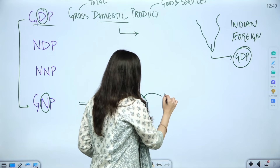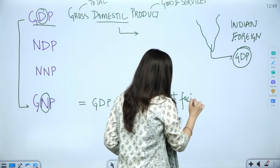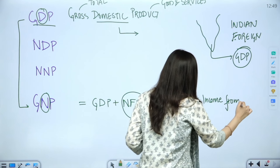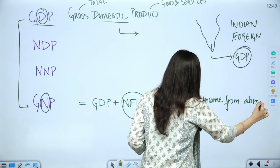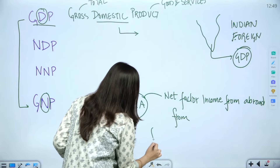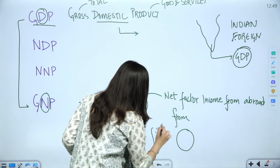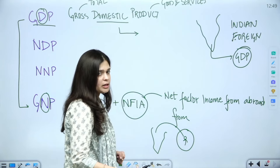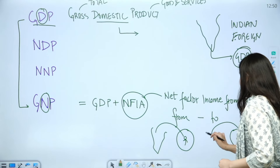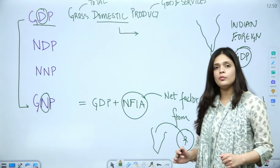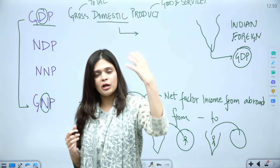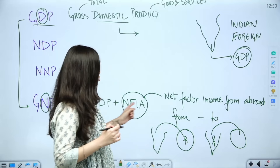To go from GDP to GNP, we do GDP plus NFIA. NFIA means Net Factor Income from Abroad. This means that if people from our country go to another country and earn money, we will add that. And we will subtract the income of people who are coming to our country and earning money.